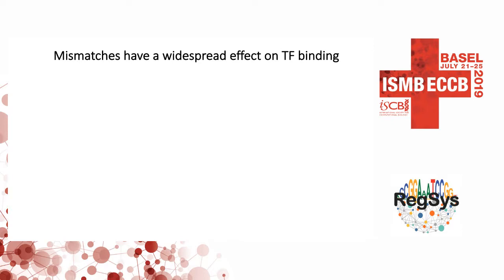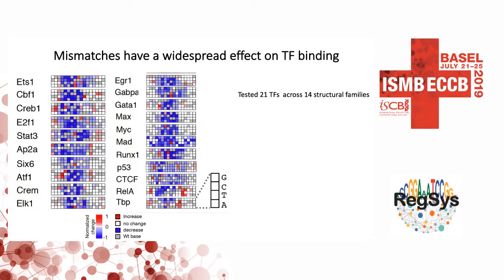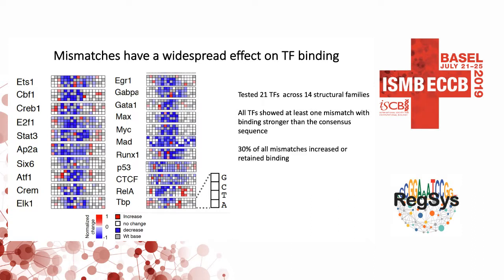We tested this effect for a bunch of transcription factors across multiple structural families. Taking a motif and making changes everywhere, every transcription factor showed at least one mismatch that had binding actually stronger than the site the protein usually recognizes, which was quite surprising. Overall, 30% of all mismatches either increased or retained binding. These are the mismatches we would expect to actually be bound by the transcription factor within the cell, rather than assuming as current studies do that every mismatch similar to the mutation would bind.